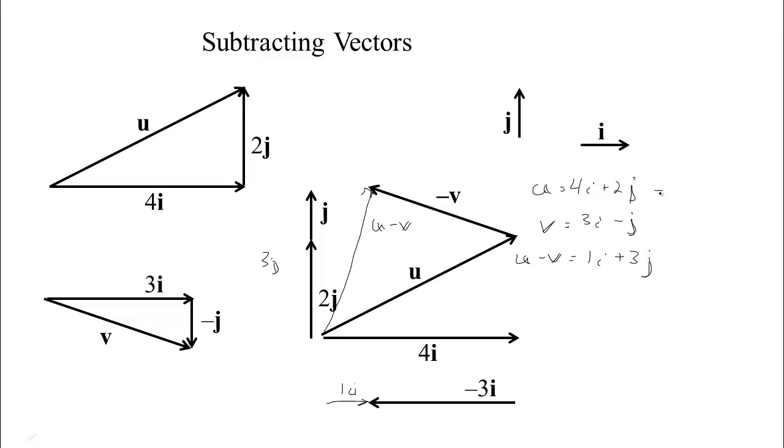Or if you have them just with a list of numbers, u is 4, 2, and v is 3, negative 1, you can just subtract the components. 4 minus 3 is 1. 2 minus minus 1 is 3. In both cases, you're just subtracting the components in order to subtract the vectors.